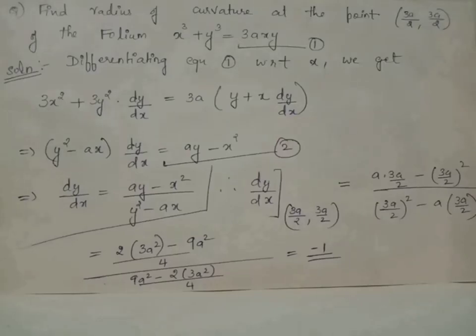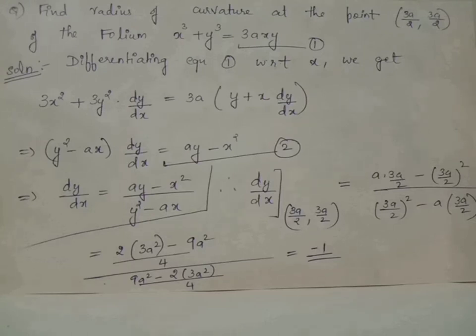Find the radius of curvature at point (3a/2, 3a/2) of the curve x³ + y³ = 3axy.